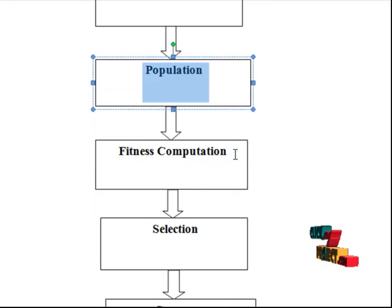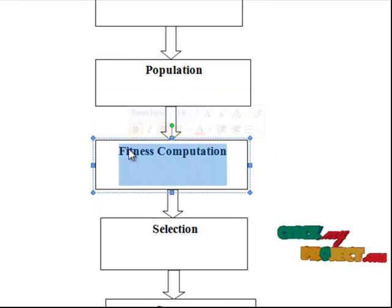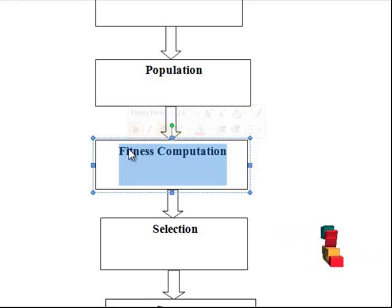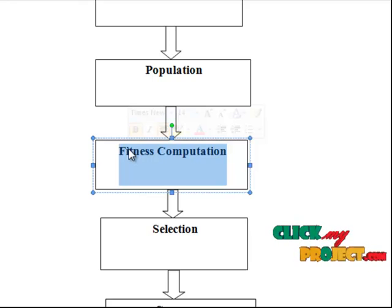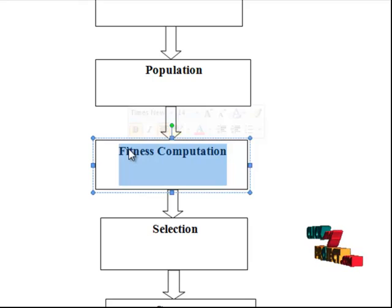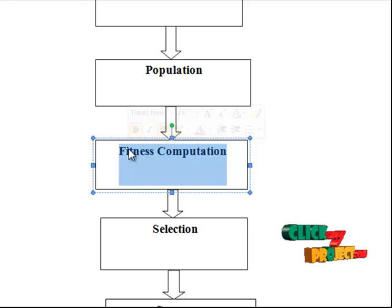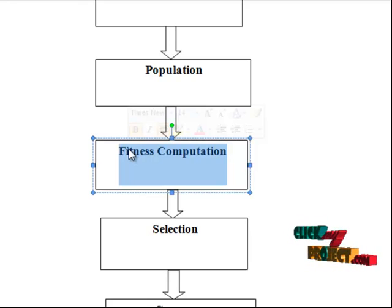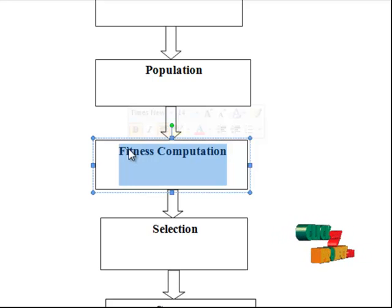The next step is fitness computation, which is accomplished in two steps. First, the pixel dataset is clustered according to the center encoded in the chromosome under consideration, such that each intensity value Xi, where i equals 1, 2, etc., up to M×N, is assigned to cluster with center Zc, where j equals 1, 2, etc., up to K.